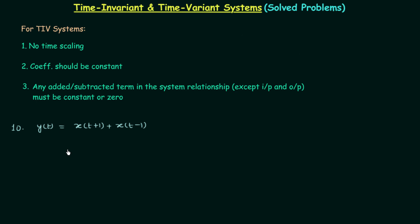Condition 1 states there should be no time scaling in the input and also in the output. In the output, there is no time scaling — we only have t here, no 2t, 3t, t-squared, or t-cubed. And if you see the two input terms, you will find there is only time shifting. Here we have t+1, which is the case of time shifting, and here we have t-1, which is also the case of time shifting. So there is no time scaling involved and the first condition is satisfied. Now let's check condition number 2. The coefficient should be constant. Here the coefficient is equal to 1, and here also the coefficient is equal to 1 — so the coefficient is constant, it is not a function of time. Condition number 2 is also satisfied.